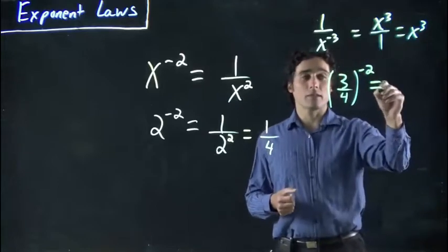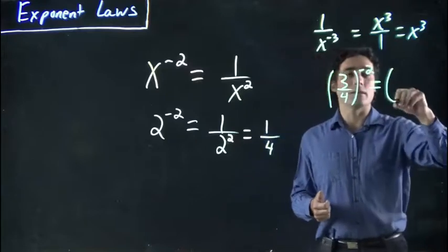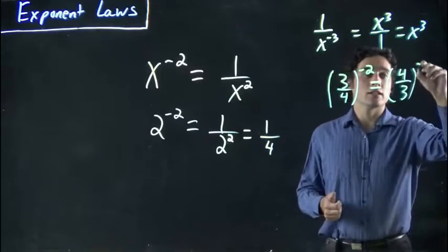This is the same exact rule. You flip it. But there's two things to flip, so what this actually becomes is 4 over 3 squared.